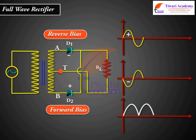During both half cycles of input AC, the current through load RL flows in the same direction, X to Y.